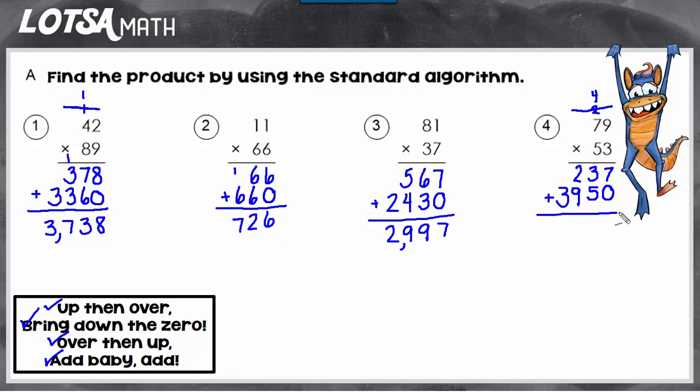And then I just need to add them up. Add, baby, add. So the answer is 4,187. So if you can remember this rhyme, it'll help you solve some 2-digit by 2-digit multiplication problems. If you need more help, you can come back and re-watch the video. Good luck!